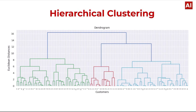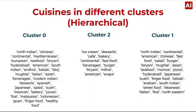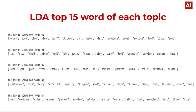Hierarchical clustering: After performing hierarchical clustering, a dendrogram is produced between customers and Euclidean distance. In hierarchical clustering, we also have three clusters — zero, one, and two. Cluster 0 is for North Indian, Chinese, Continental, seafood, and biryani. Cluster 2 is for ice cream, dessert, cafe, bakery, fast food, and biryani. Cluster 1 is for North Indian, Continental, food, salad, burger, and biryani.